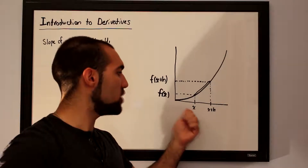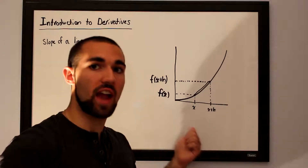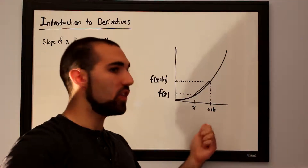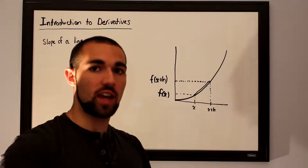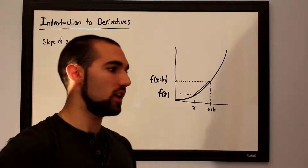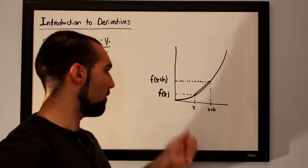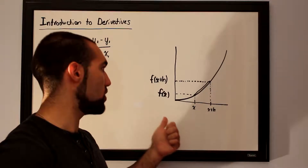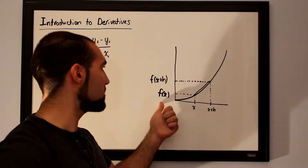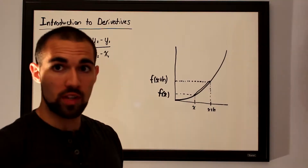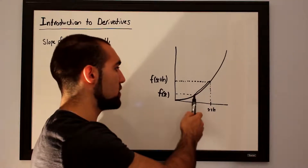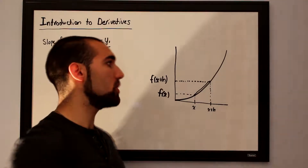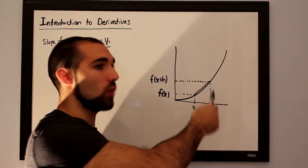Here we have an initial x value, which will act as our x1. Here we have x with an infinitely small increase in x, which we will call h. So we have x and then x plus h. Here we have the outputs of the function, which are f of x and f of x plus h. Say I wanted to find the slope of this graph at this specific point.